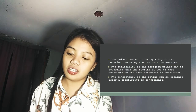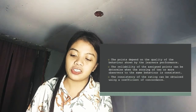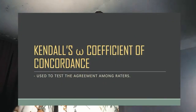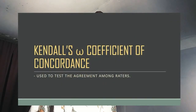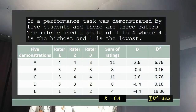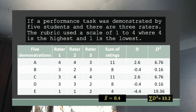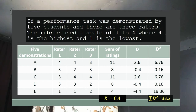The reliability of the points can be determined if there is consistency of rating among two or more observers. To measure consistency of rating, we use Kendall's coefficient of concordance, which is used to test the agreement among raters. For example, a performance task was demonstrated by 5 students and there are 3 raters. The rubric uses a scale of 1 to 4, where 4 is the highest and 1 is the lowest. The 5 demonstrations are represented as A, B, C, D, and E.